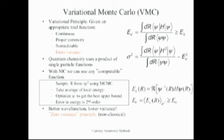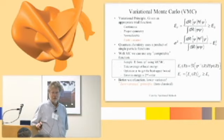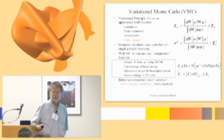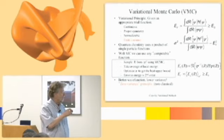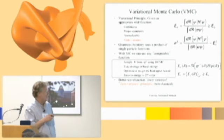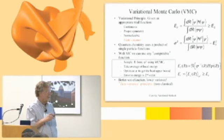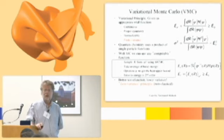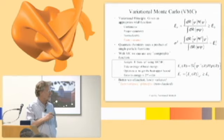The idea of variational Monte Carlo is that you make up, through your imagination, a wave function. In particular, we're going to talk about a Slater-Jastrow wave function — a particular form. This is what quantum chemists do all the time. Here is the variational theorem — the Rayleigh-Ritz principle. You take any wave function satisfying certain properties, and this ratio gives you an upper bound to the ground state energy.